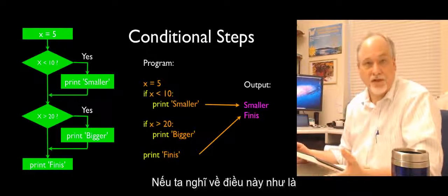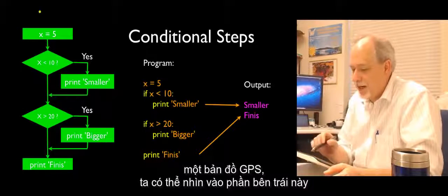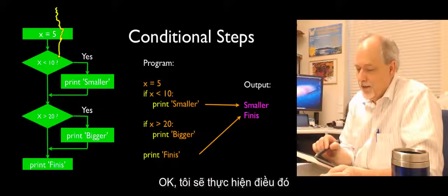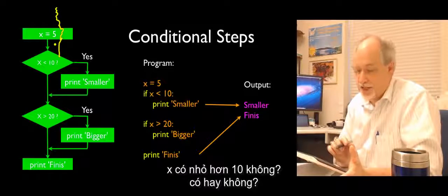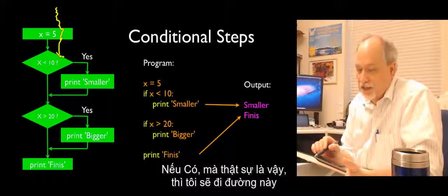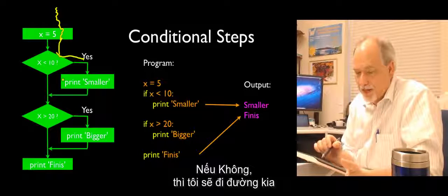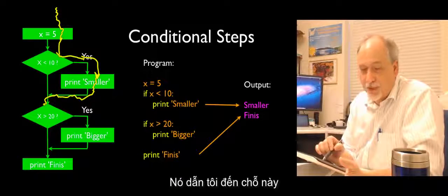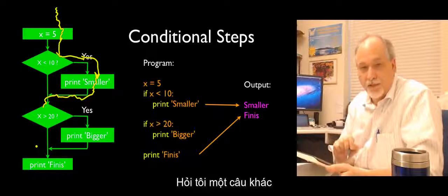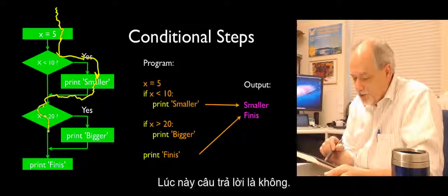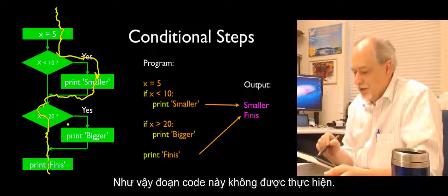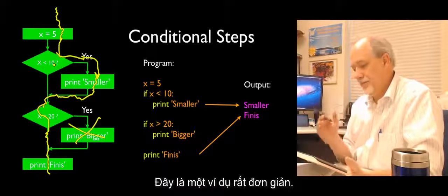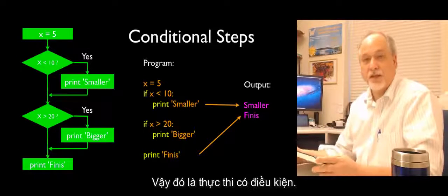Thinking of it like a GPS roadmap: the CPU comes roaring down, sets x to 5, then faces a choice — is x less than 10? If yes, it goes that way and prints 'smaller'. Then it reaches another question: is x greater than 20? The answer is no, so it skips that block of code. That's conditional execution in a nutshell.